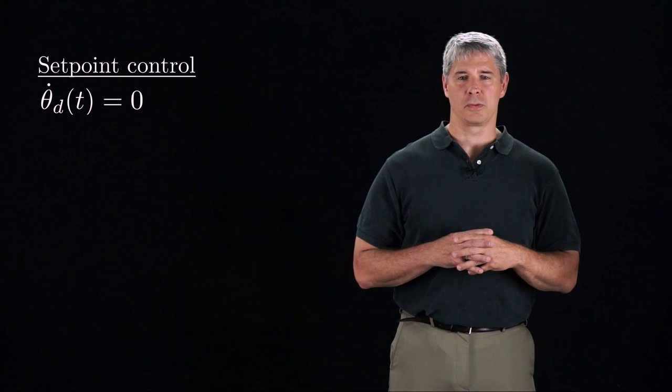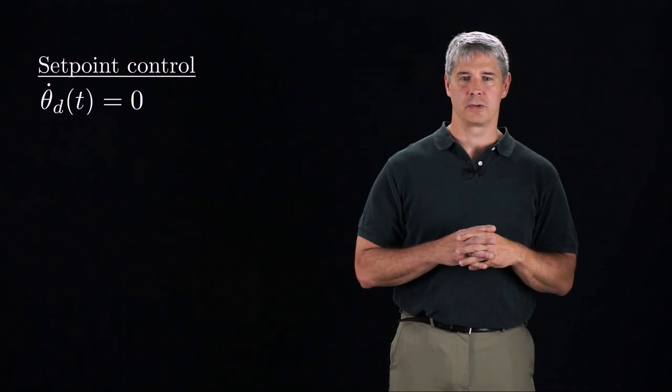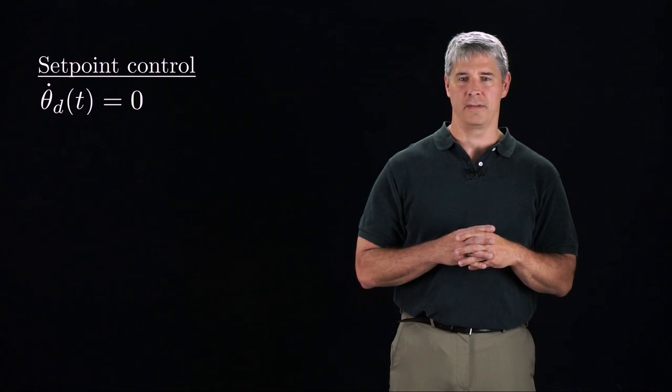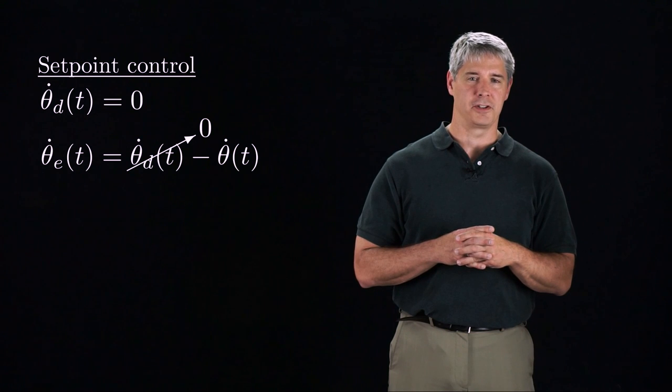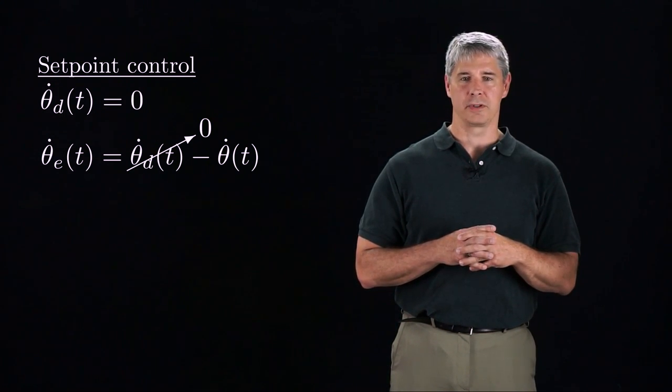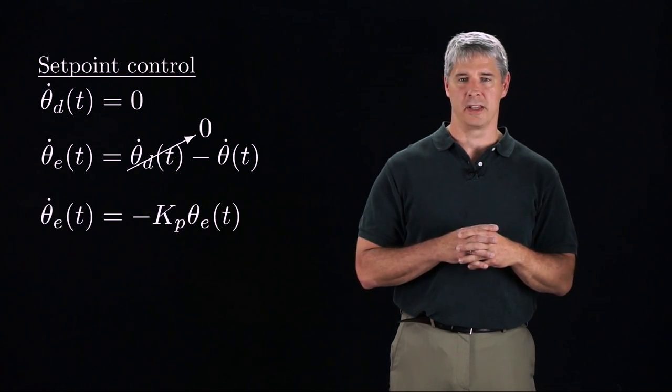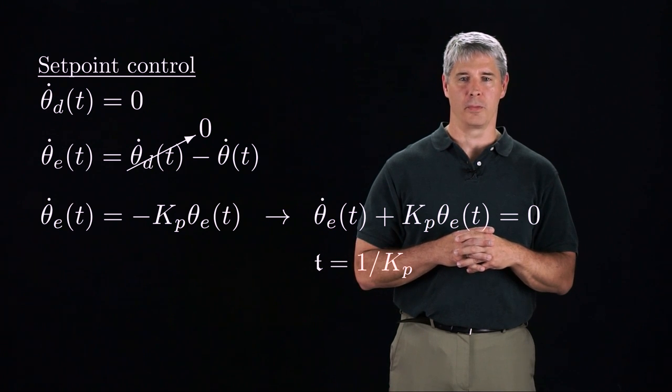Let's take a look at the case where the desired velocity is 0. This is called setpoint control, because we're controlling the joint to a constant value. Then the rate of change of the error is just the negative of the joint velocity. Plugging in the P-controller theta dot equals kp theta e, we get this differential equation in theta e.